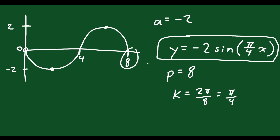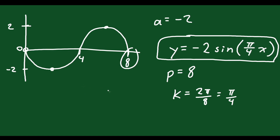There are multiple equations that can represent this graph — this was just the most straightforward one. I try not to include any phase shifts unless we have to, just to keep it simpler. Instead of a phase shift, I made it a reflection. You could have made it a cosine or a sine with a phase shift, but we chose the most straightforward answer. I'd encourage you to try to come up with some other equations for each of these on your own, just as practice.